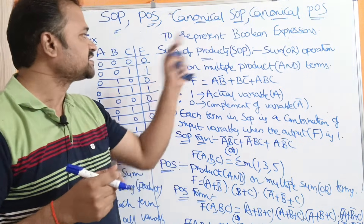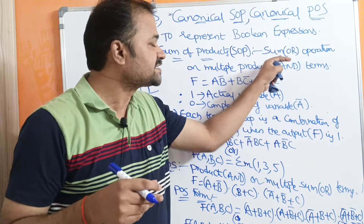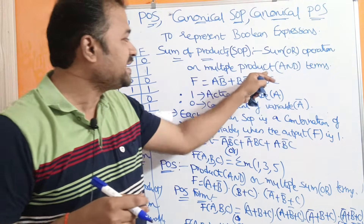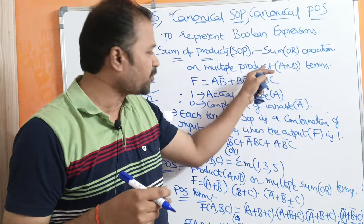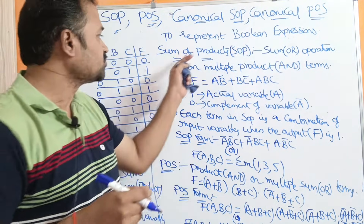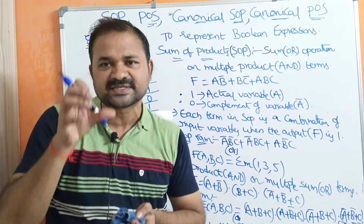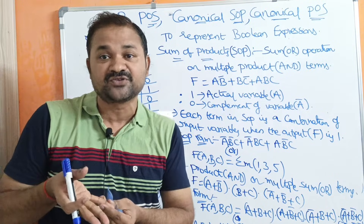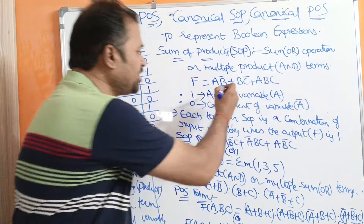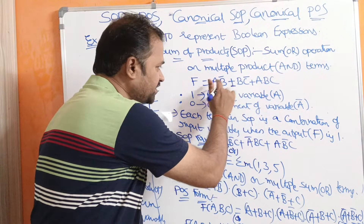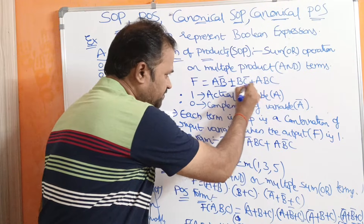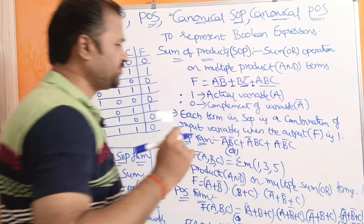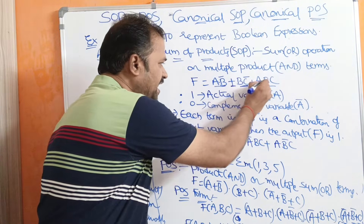SOP stands for Sum of Products. Sum means the OR operation will be performed on multiple product terms. Product terms can also be called as AND terms. So we need to perform sum operation on multiple product terms.